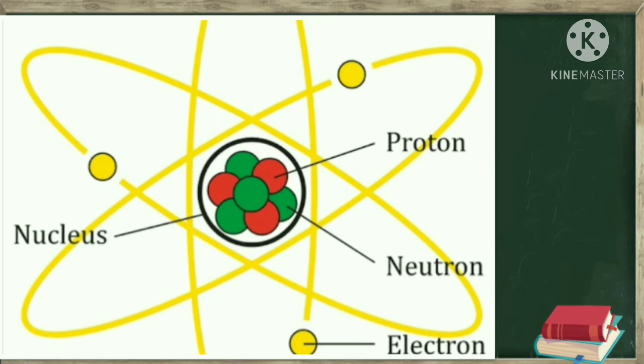Every atom has the same number of protons and same number of electrons. The number of electrons is always equal to the number of protons.